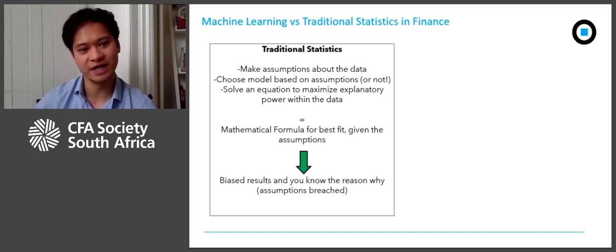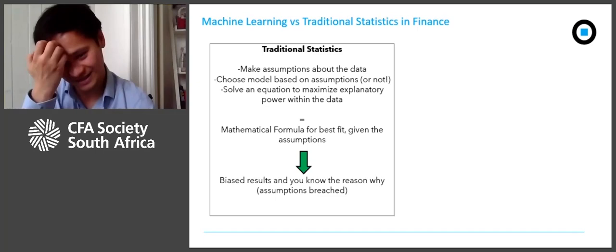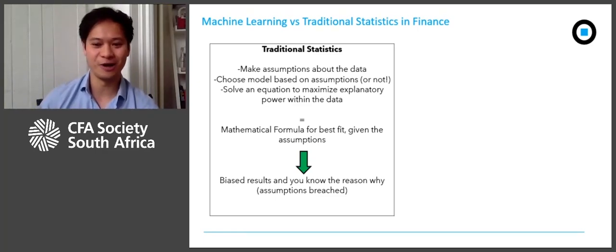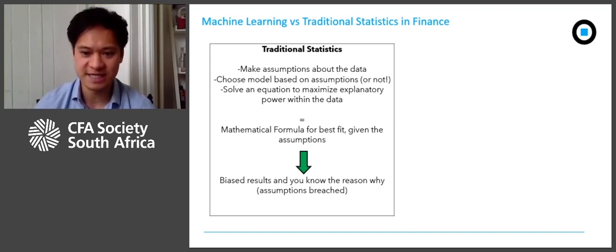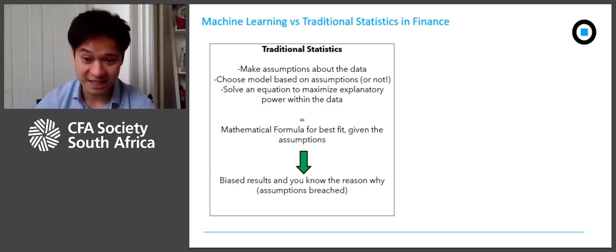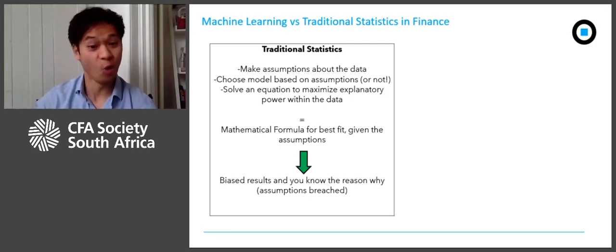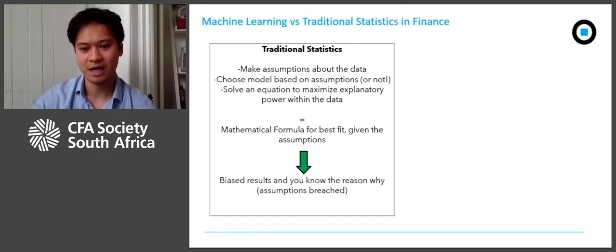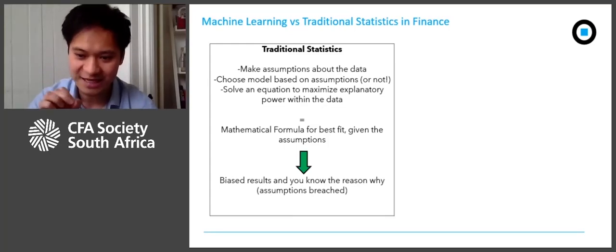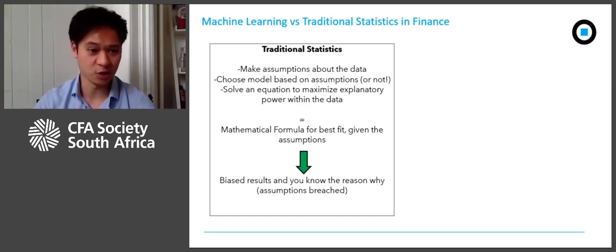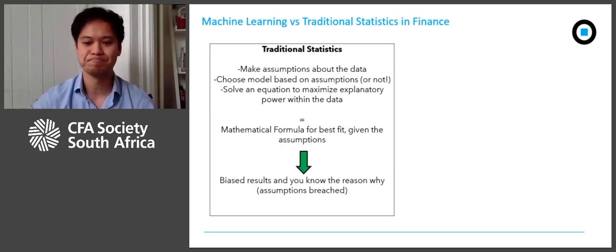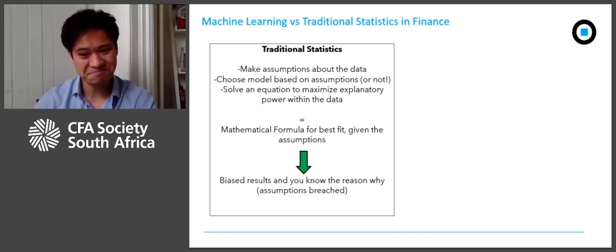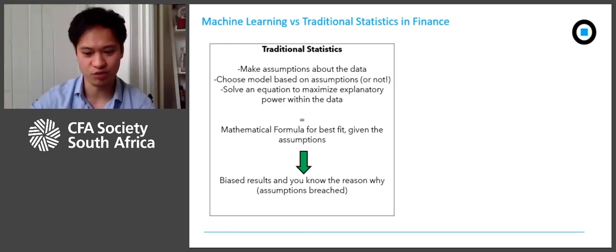Moving on to how machine learning differs from traditional statistics that we use in finance. With traditional statistics, we first start by making some assumptions about our data — for example, that the observations are independent and identically distributed. Then we choose a model based on those assumptions. Quite often in finance, we're choosing a model for simplicity even though we know that the data violates those assumptions. Then we solve an equation to maximize the explanatory power within all of our data — we're focused on explaining the data that we have. You get a mathematical formula for the best fit, and the answers are biased, but you know why they're biased.